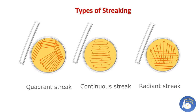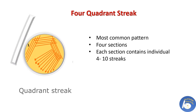Streaking can be done in different patterns. The most common patterns are the quadrant streak plate method, the continuous streak plate method, and the radiant streak plate method. The quadrant streak plate method is the most common type. It has four sections, and each section contains individual four to ten streaks. You can see in the picture how to make the quadrant streak.